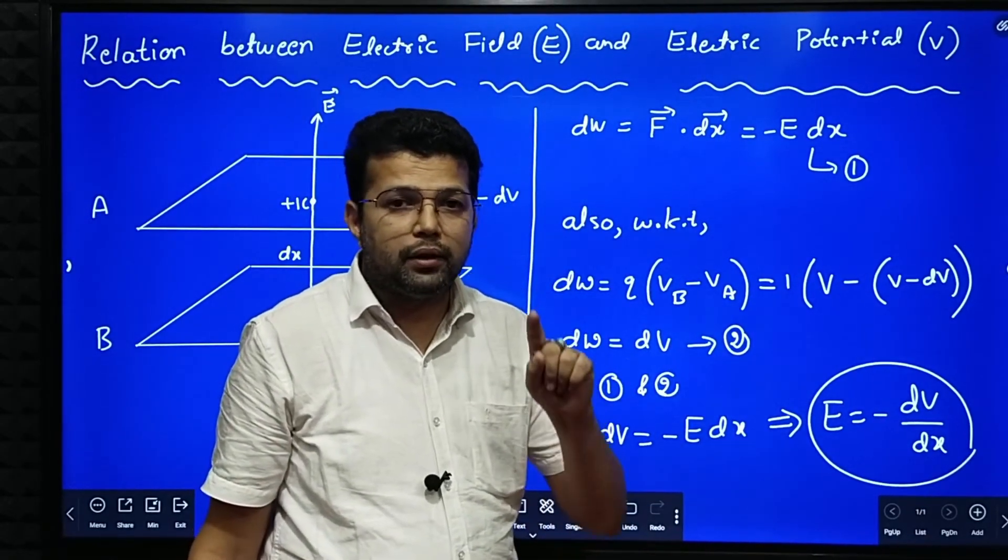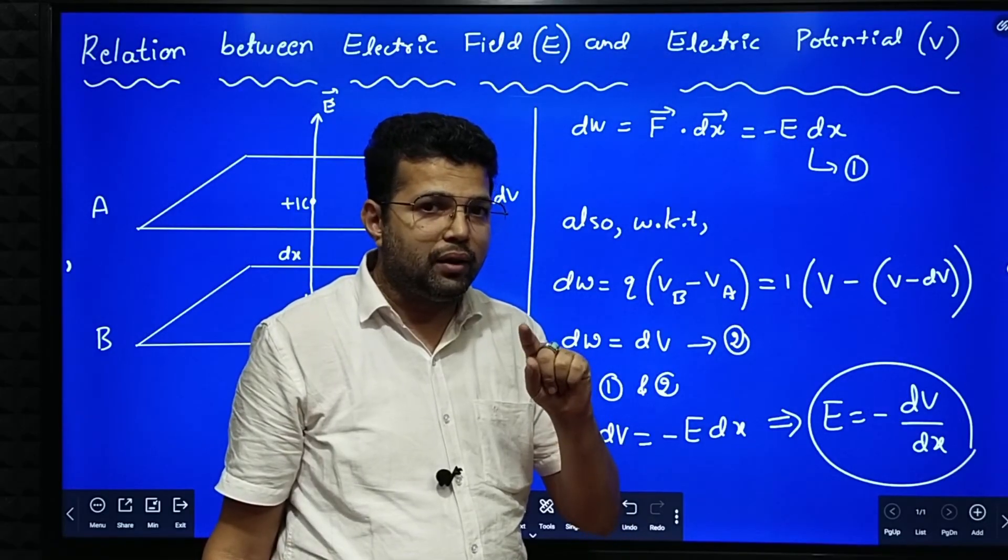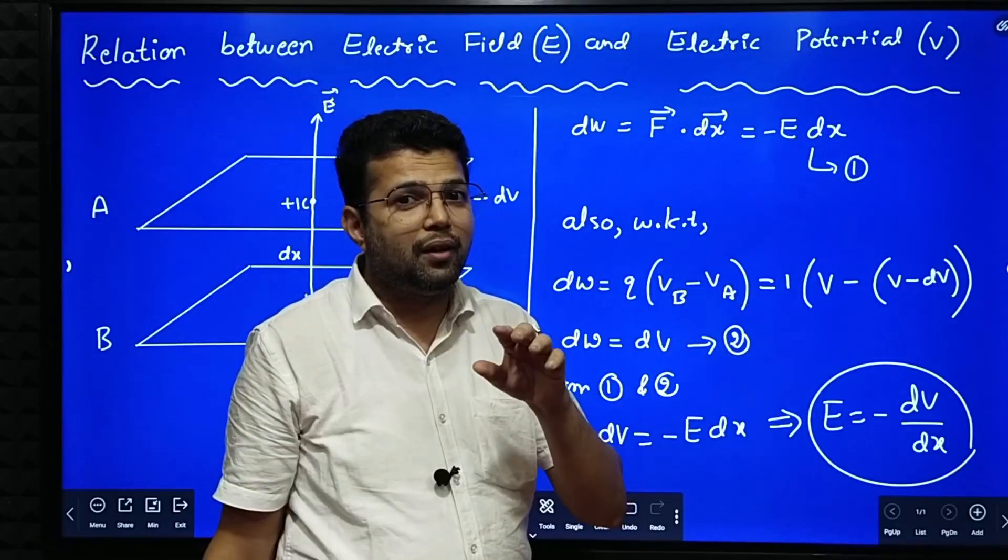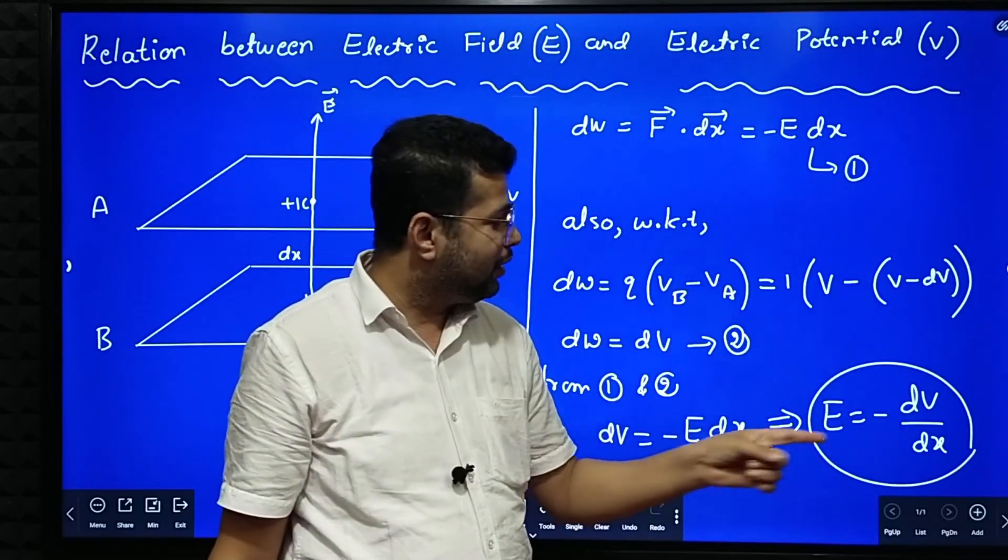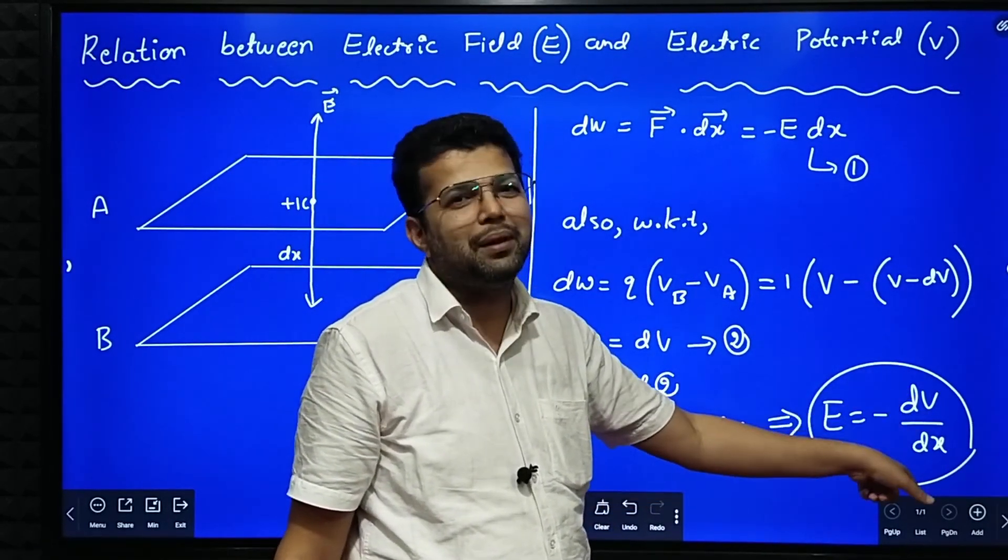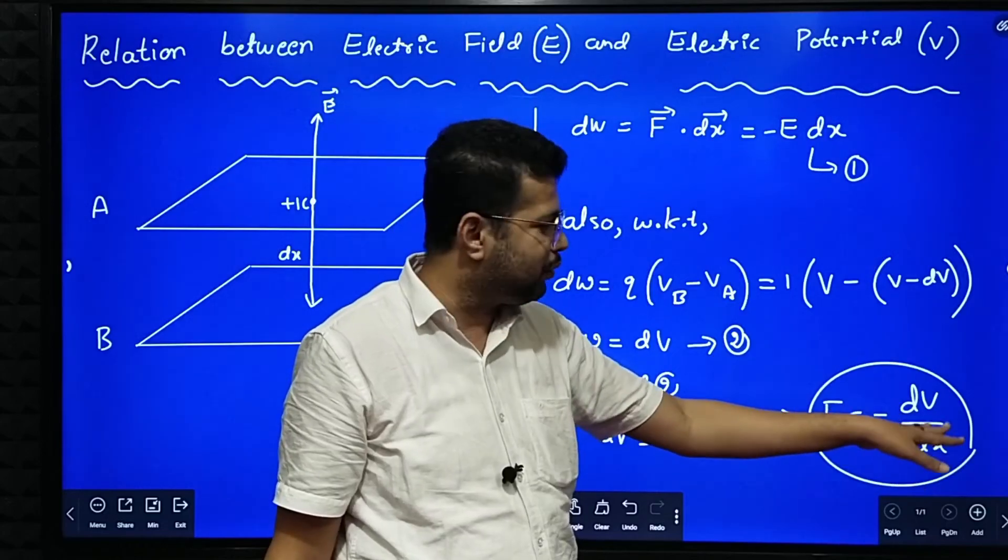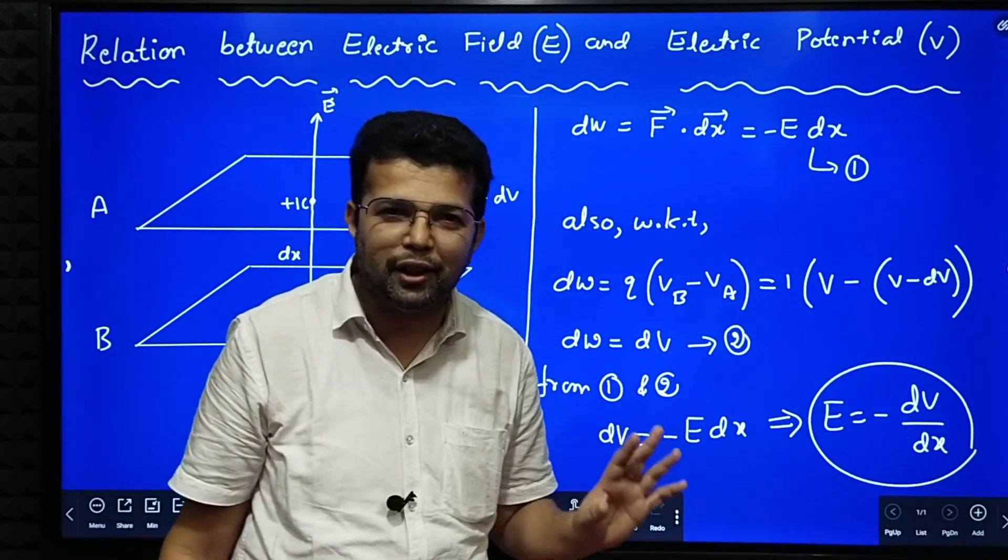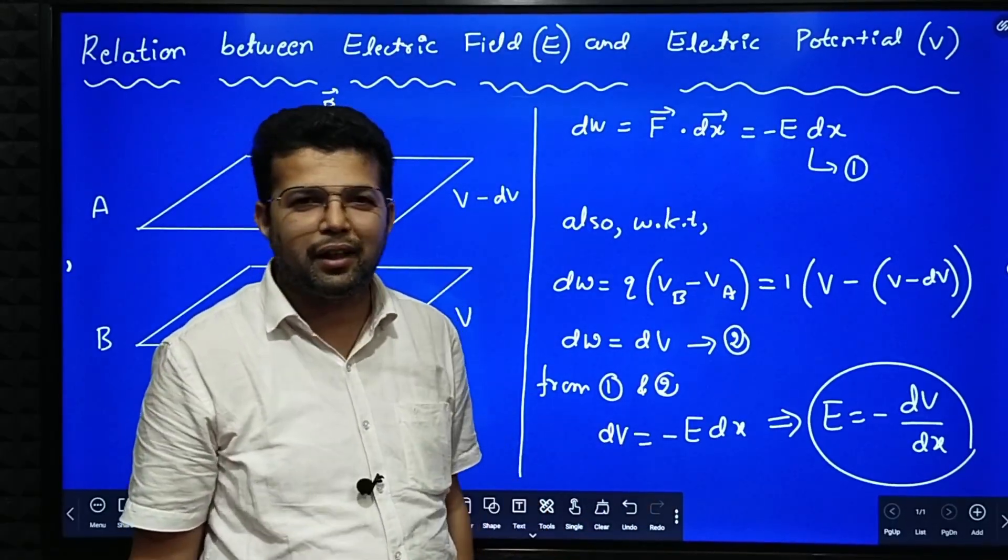If you remember, unit of SI unit of electric field, E is equal to F by Q. Newton per coulomb. Also, you might have seen somewhere, electric field SI unit is volt per meter. That comes from this equation. This equation means that electric potential decreases in the direction of electric field. Thank you very much.